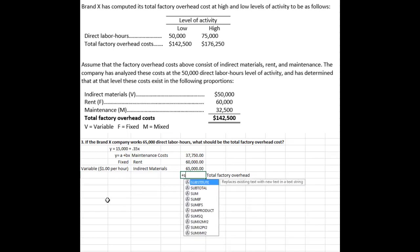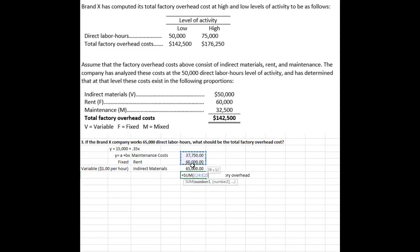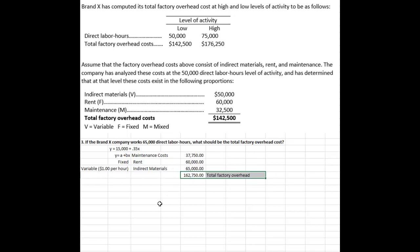So my total factory overhead is going to be the sum of all three costs, or $162,750 — what we expect the total factory overhead to be for Brand X Company. These calculations are very helpful for companies as they go through a planning stage and try to budget what their costs could be if they hit various levels of production.